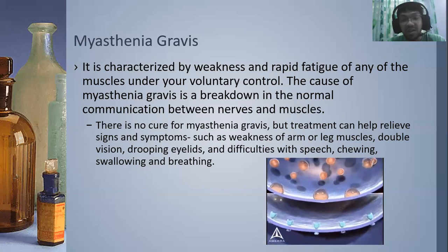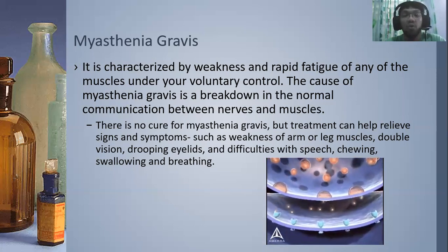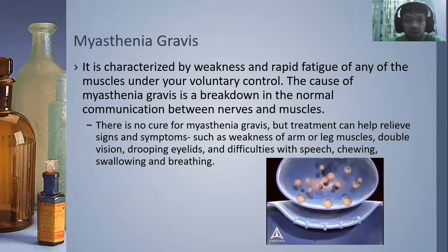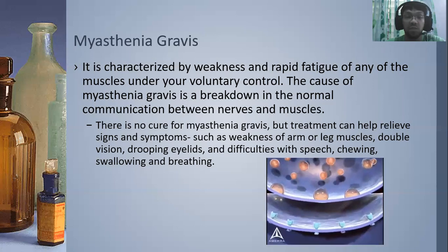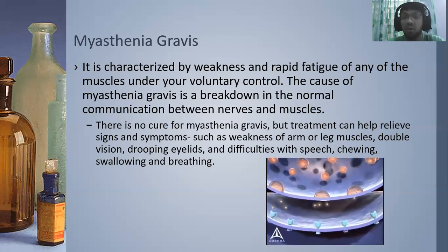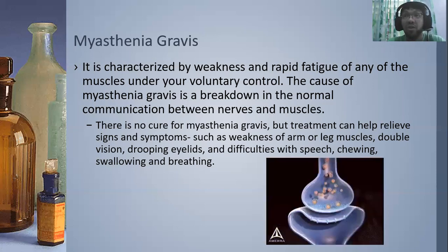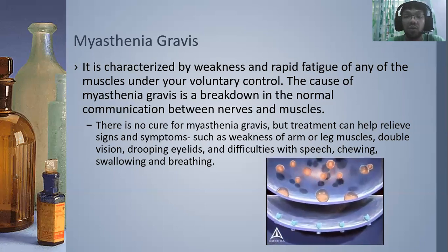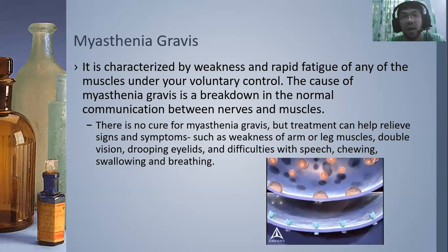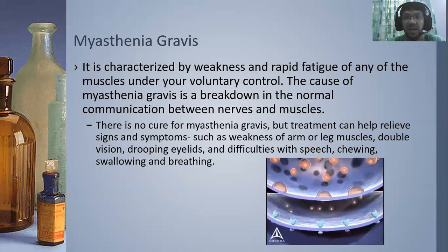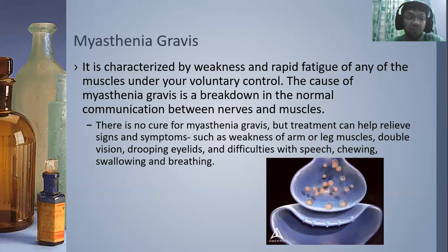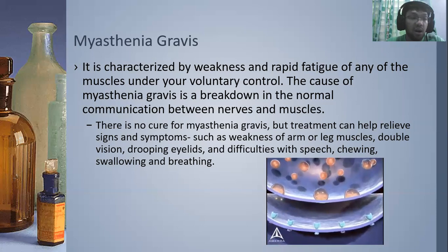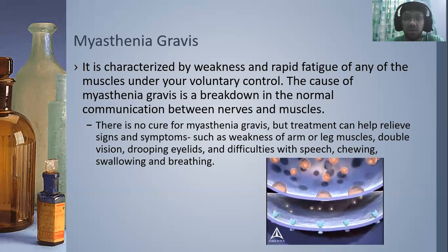Now, for myasthenia gravis, there is no cure. But there are certain drugs and treatments that can help relieve the signs and symptoms, such as weakness of an arm or leg muscle, double vision, drooping of the eyelids, and difficulty with speech, chewing, swallowing, and — in the last stage of this disease — breathing, since there are skeletal muscles involved with breathing as well.